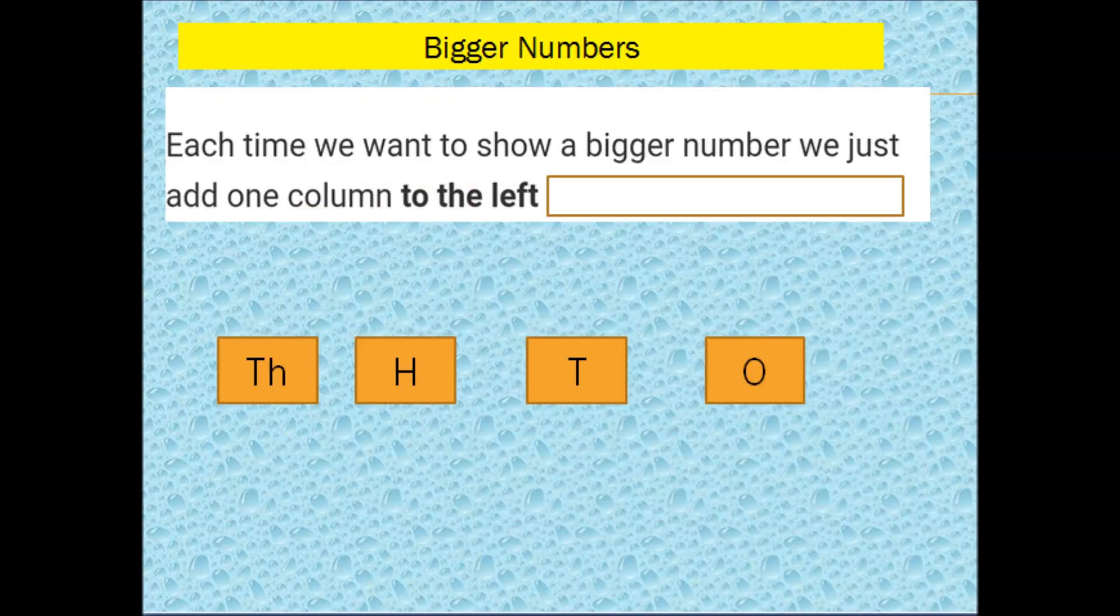So each time we want to show a bigger number, we just add 1 column to the left. So if we want to show a 4 digit number, we will place 1 column on the left of the 100s place and that column will be known as the 1000s place.